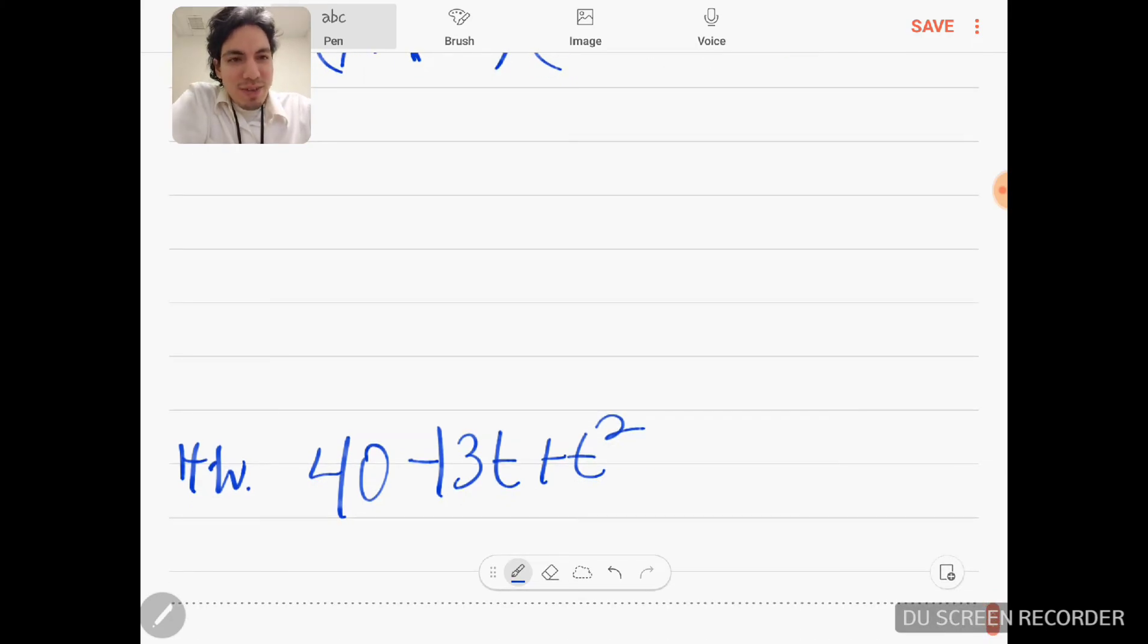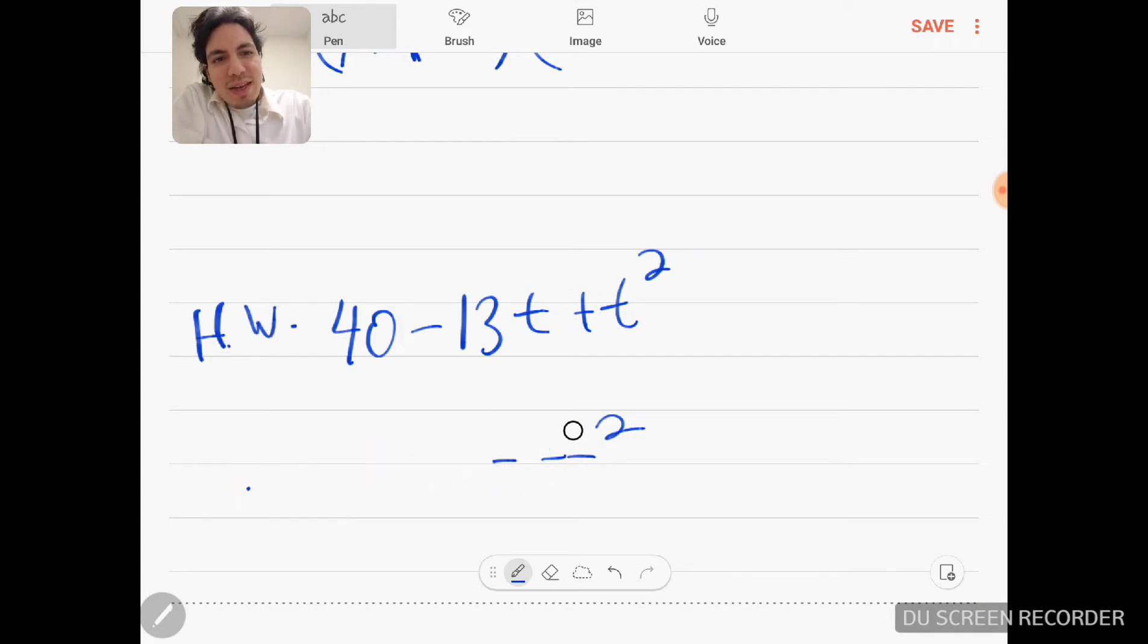So this one - wow, okay, that's hard to read - this is 40 minus 13t plus t squared. And that is your homework for tonight, guys. I hope you enjoy that homework. So be sure to leave your answers down in the comment section below. You don't have to solve for x, you just factor.